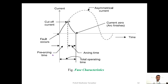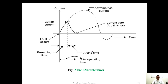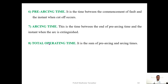The total operating time is divided into two parts. Pre-arcing time is the period from the occurrence of the fault until the fuse starts melting. Arcing time is from the point when the fuse starts to melt until current zero. The addition of pre-arcing time and arcing time equals the total operating time of the fuse. This is an important topic that commonly appears in university examinations.